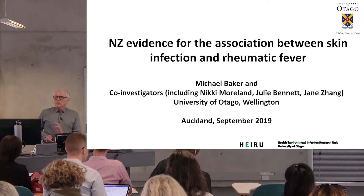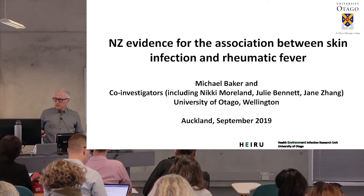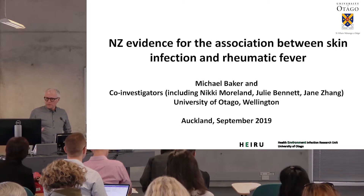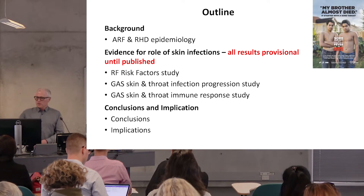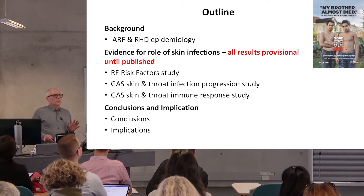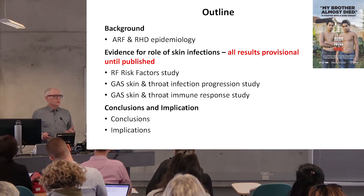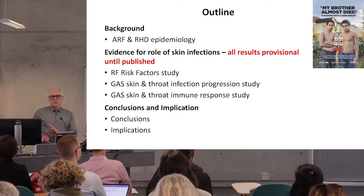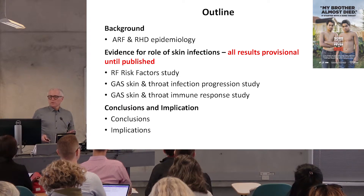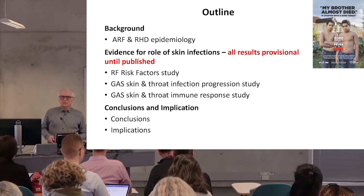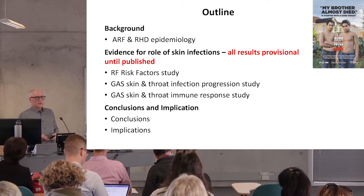I'm really going to be talking about some of the evidence around skin infections and particularly rheumatic fever. I've got a few colleagues who contribute to this presentation. So what I'm going to talk about is the epidemiology of ARF. Simon Thornley's work has really put this on the map in New Zealand. Looking at the epidemiology is quite helpful for thinking about whether scabies is in the causal pathway. I'm going to present three strands of evidence around the role of skin infection. All of these results are still provisional because they are in various stages of publication and review. And then what does all this mean, particularly from the perspective of acute rheumatic fever.